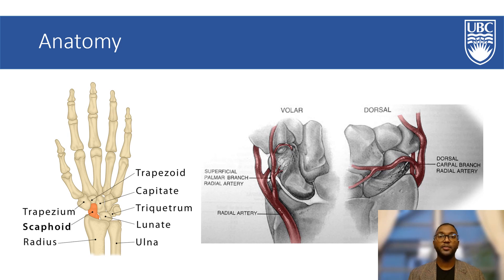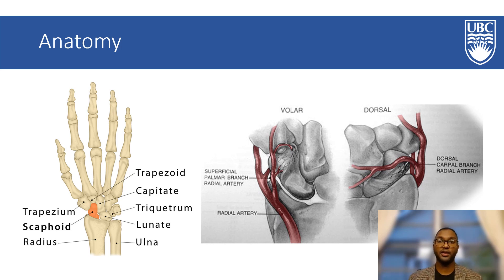The scaphoid blood supply originates from the radial artery which splits into the superficial palmar artery and dorsal carpal branch. The dorsal carpal branch supplies approximately 80% of the scaphoid blood flow and does so in a retrograde fashion. When fractures of the waist or proximal region of the bone occur, patients are at risk of avascular necrosis because of the retrograde blood flow pattern. This may lead to delayed healing or a non-union.